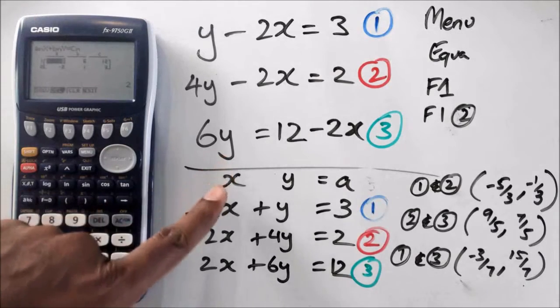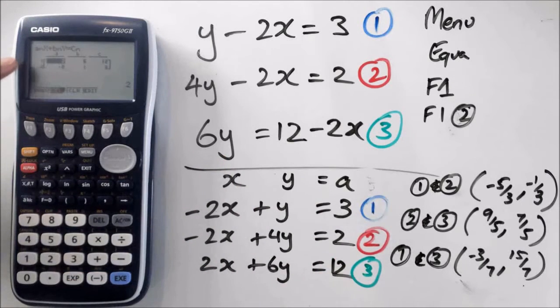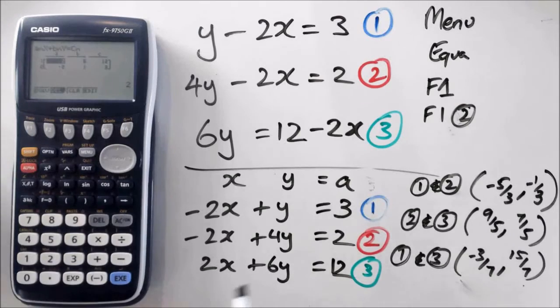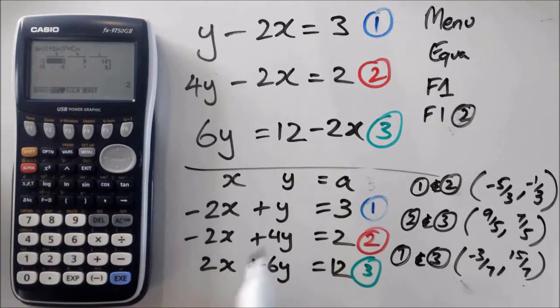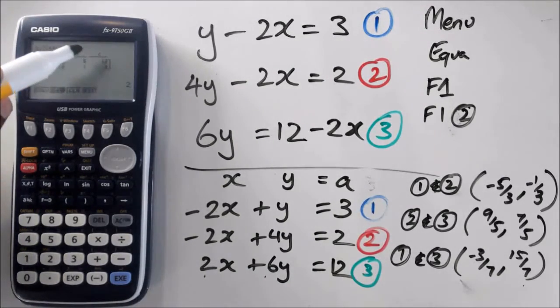So when we actually, the reason we write it in this format, x, y, and the constant, is we actually put the coefficient of x as a. So if I was to do, I think this one was, I did equation 3 and equation 1. So if you look at it, we've got 2, 6, and 12. So that's what I put here, 2, 6, and 12.